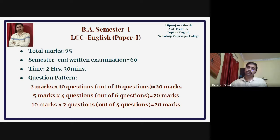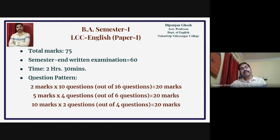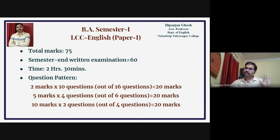The first part is 20 marks — it comprises 2 marks multiplied by 10 questions. Out of 16 questions, you have to answer any 10, and each comprises 2 marks. So 10 into 2 equals 20. That is the first part.